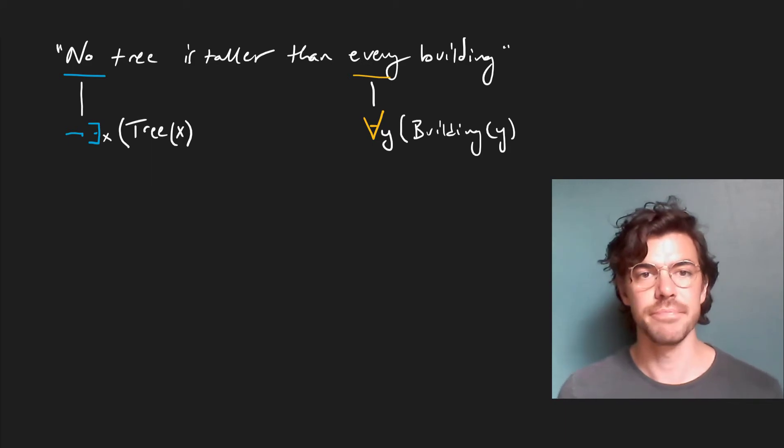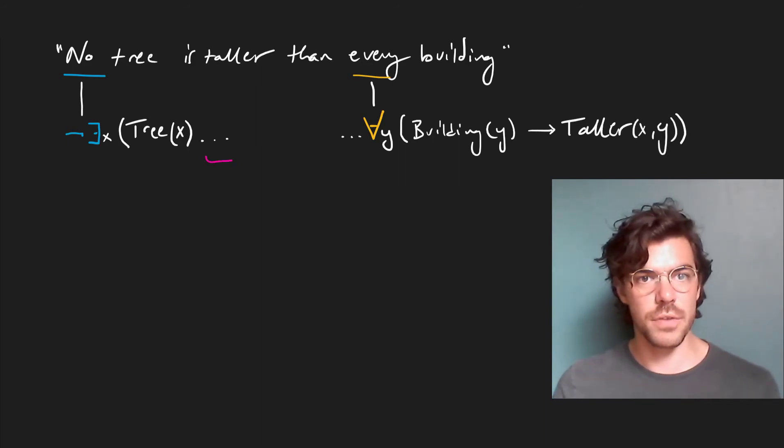Now we have to do something a little bit tricky. We would say for every y, if y is a building, then x is taller than y. So we have to read this as a conditional. And so now all that remains is to fill in these ellipses right in the middle.